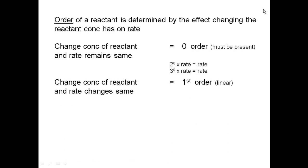If you change the concentration of the reactant and the rate changes by the same factor, then it's first order — a linear relationship. For example, if you double the concentration: 2¹ × rate = 2 × rate. If you triple the concentration and the rate triples, then 3¹ × rate = 3 × rate — first order.